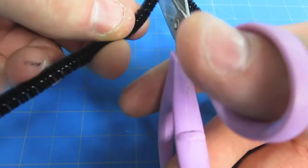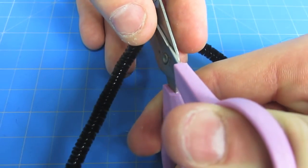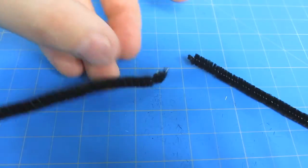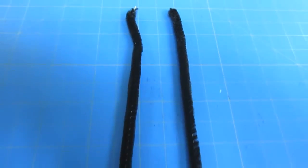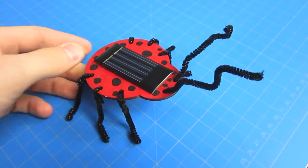Cut another pipe cleaner in half. This will be for the antenna. Once finished, use remaining pipe cleaners on your second bug.